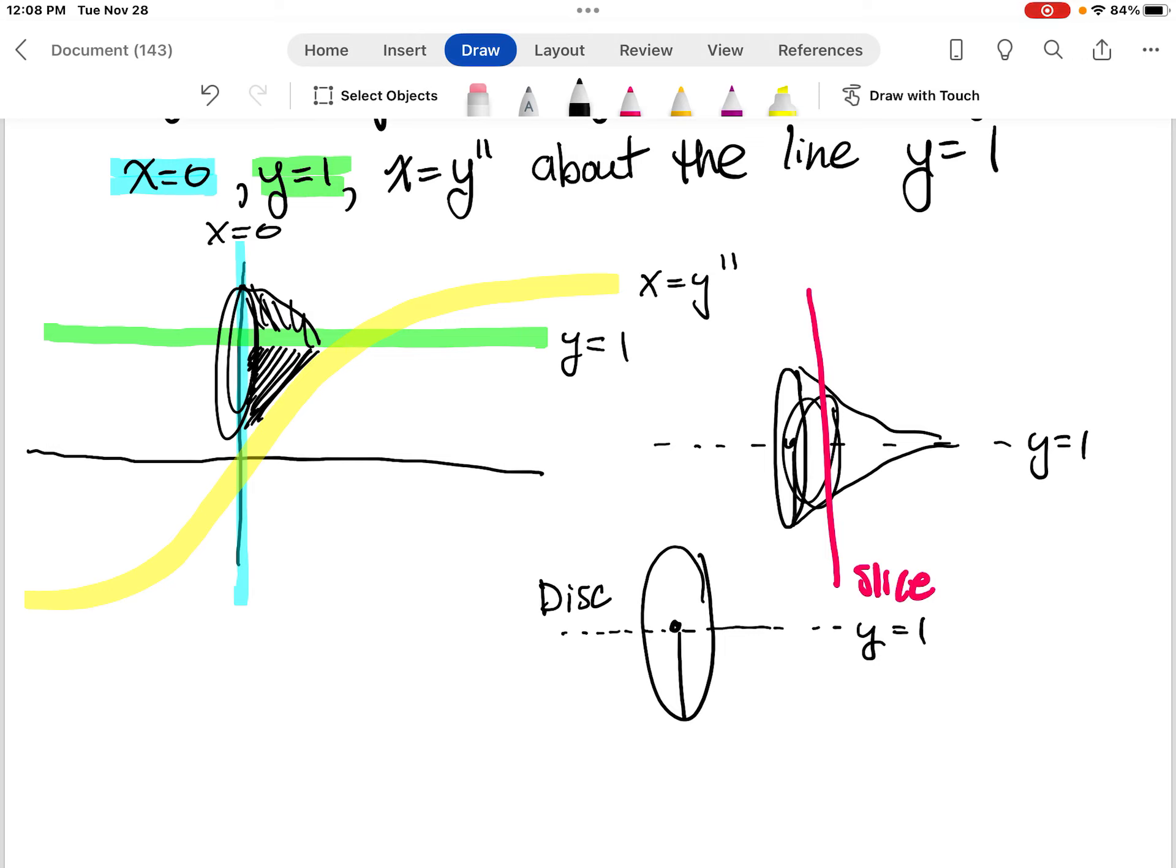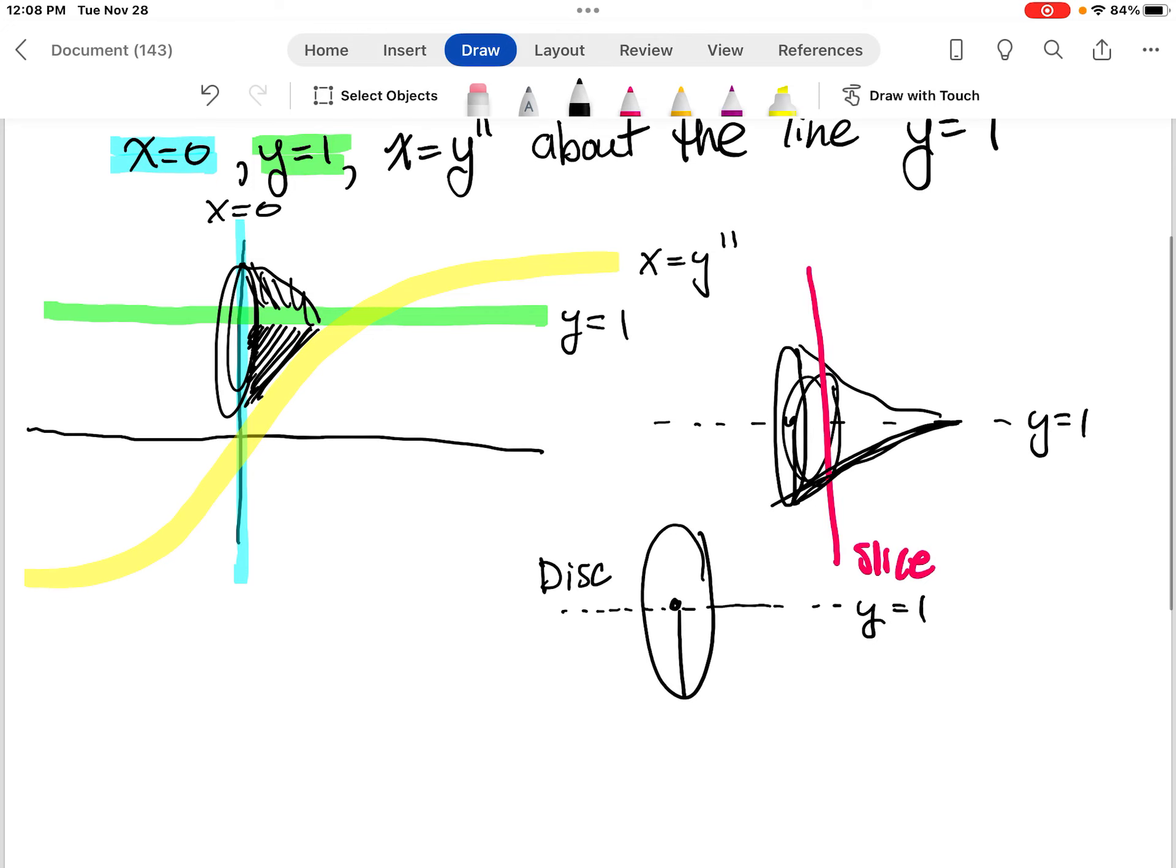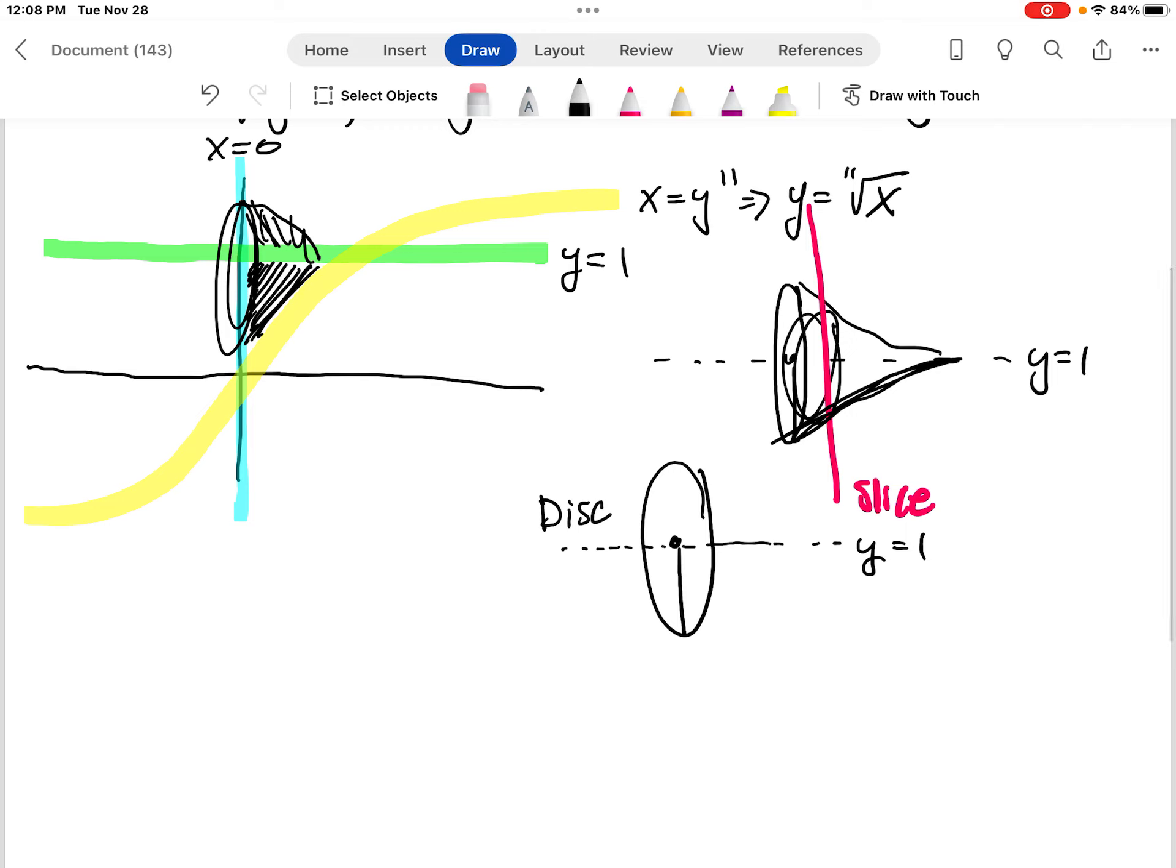So my radius is going to be from here out, which would be 1 minus, and then this part of the function right here, which is y to the 11th, but since we're rotating this around the line y equals 1, which is in the same direction just shifted up as the x axis, we're going to look at this in terms of x. So I'm going to rewrite this as y equals the 11th root of x.